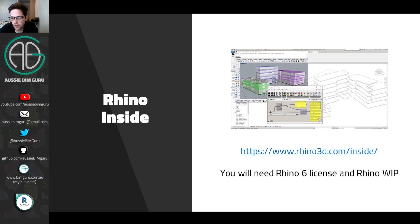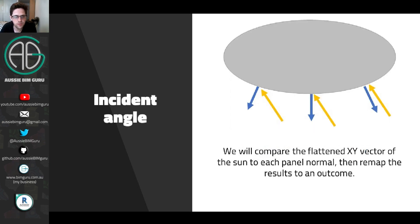Rhino Inside is available from its link and you'll need a license of Rhino 6 and Rhino work-in-progress to run it. It's a really brilliant little program for quick geometry processing tasks. We're going to be using the incident angle of the sun versus the normal of all the panels, flattening the vector so we ignore the z component of the sun angle. The bigger or smaller the angle, the more open or closed the panel becomes.